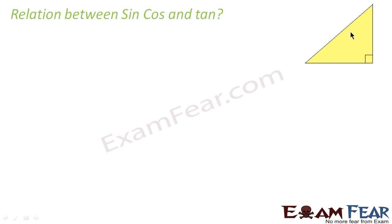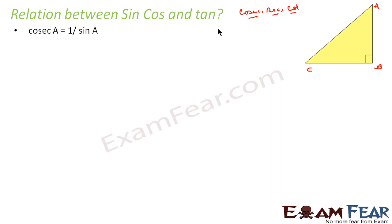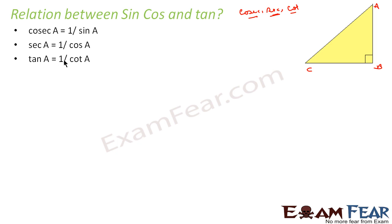Let's try to derive some relationships between sine, cos, and tan. In triangle ABC, not only do we have sine, cos, and tan — we also have cosec, sec, and cot. So we have three more functions. Cosec is nothing but 1 by sine A, sec is nothing but 1 by cos A, and cot is nothing but 1 by tan A.